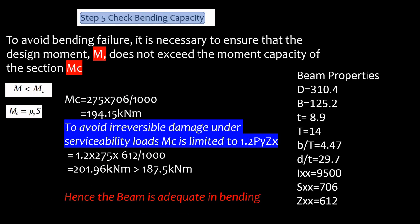The next thing that we do is to check bending capacity. So to avoid bending failure it is necessary to ensure that the design moment M doesn't exceed the moment capacity of the section, or M is less than MC. So MC is PY×S where S is the section modulus.